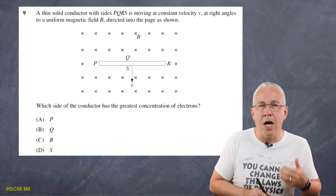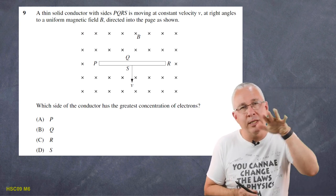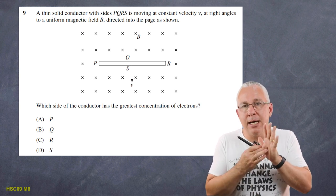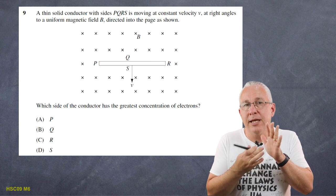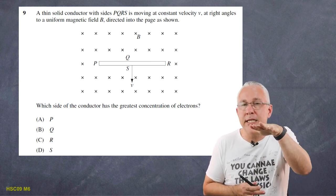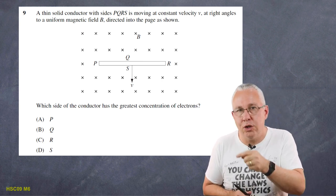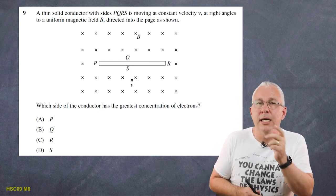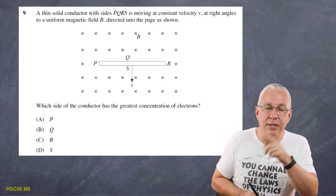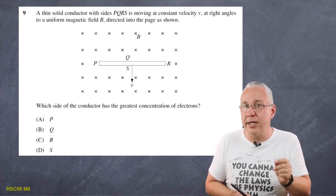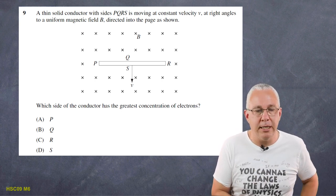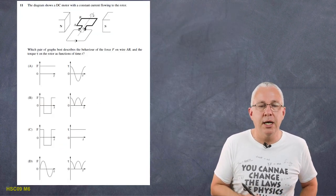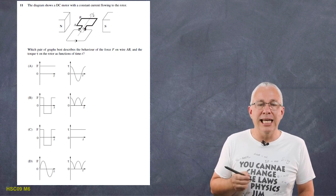Using the palm rule: my fingers represent the magnetic field (into the page), my palm represents the direction of motion of the conductor (down the page), and my thumb gives the conventional current direction — from P to Q. But that's conventional current; electron flow goes the other way, from R to P. So the side with the greatest concentration of electrons is P, and the answer is A.